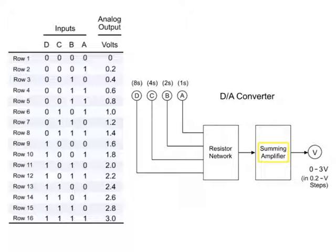The summing amplifier receives the output voltage from the resistor network and amplifies it to the expected voltages.